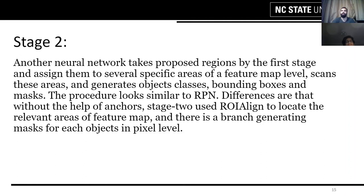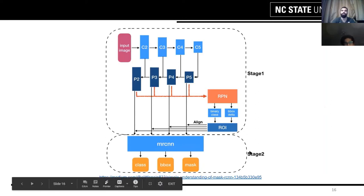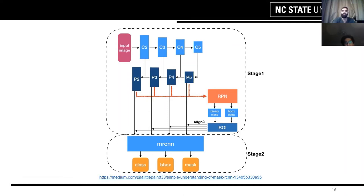In Stage 2, another neural network takes the proposed regions from Stage 1 and assigns them to specific areas in our feature map. It generates object classes, bounding boxes, and masks at pixel level. It uses ROI Align to locate the relevant areas of the feature map, which is better than standard ROI pooling. Each level of the feature pyramid has an alignment with the ROI, which generates better results than pooling functions.